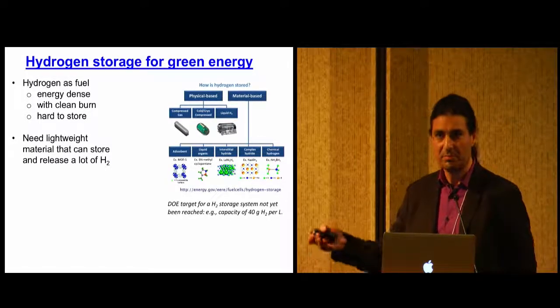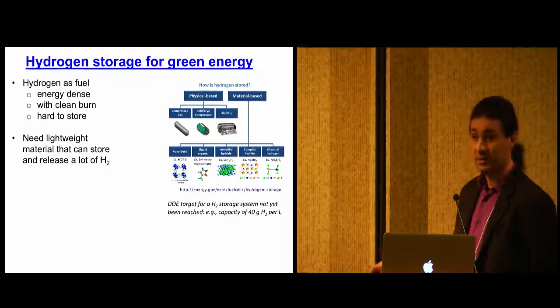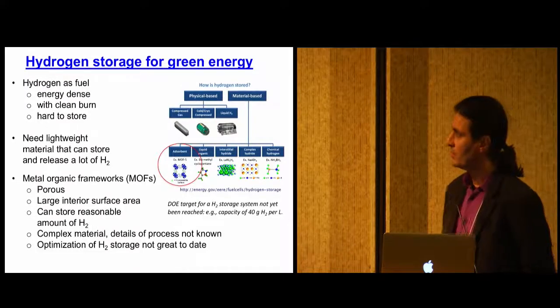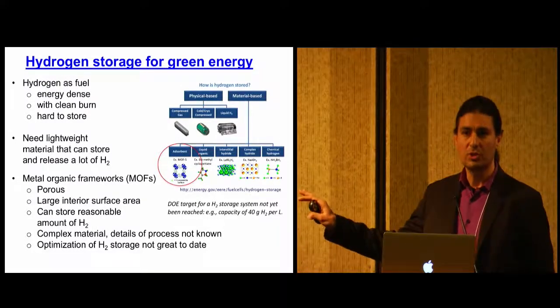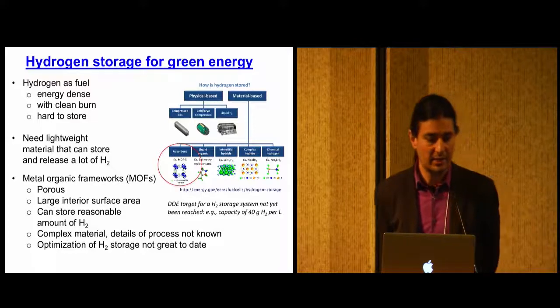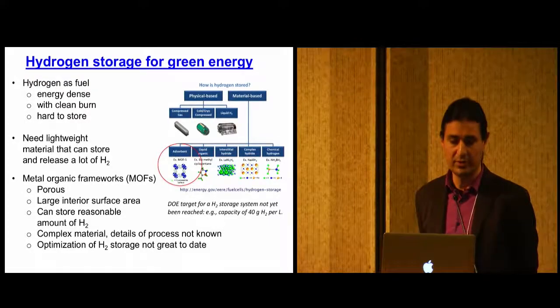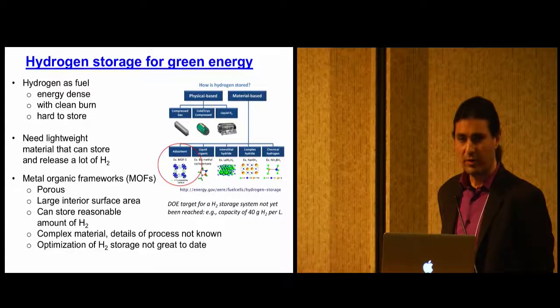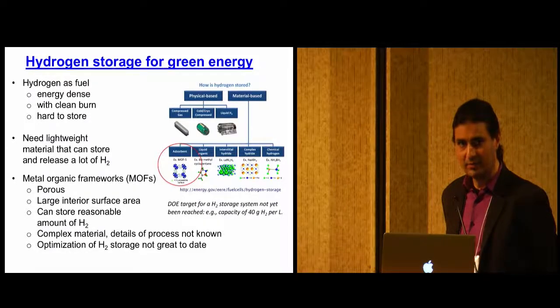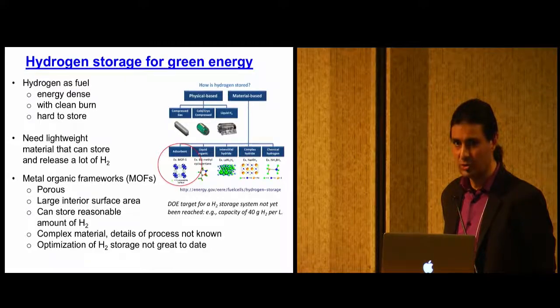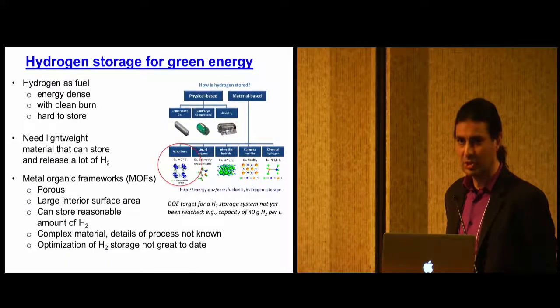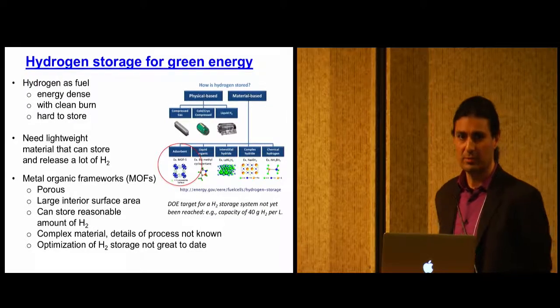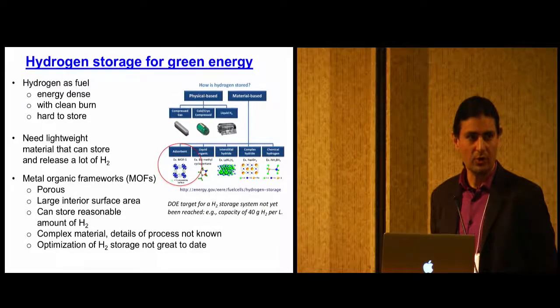So what is this material sponge? There's a lot of possibilities people have been working on and proposing. One class are called Metal Organic Frameworks. They're basically porous materials, lots of holes in them. Large interior surface areas, and the hydrogen can stick in there. They're very complex materials, so the details of this binding of the hydrogen is not really understood, and the optimization of the material to make more hydrogen storage therefore is difficult because it's become highly empirical. Try, try, try, see what happens.